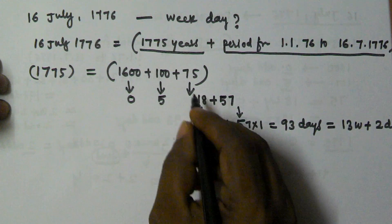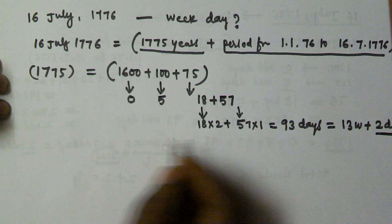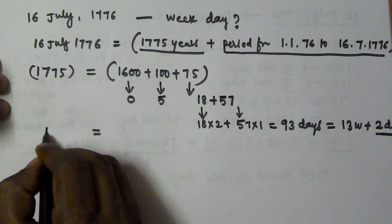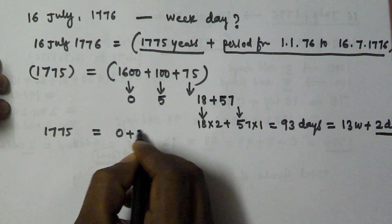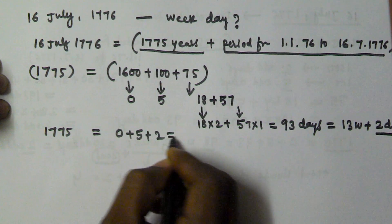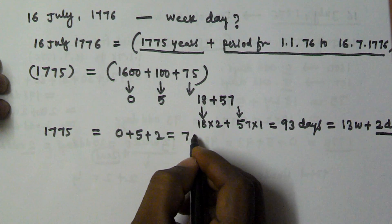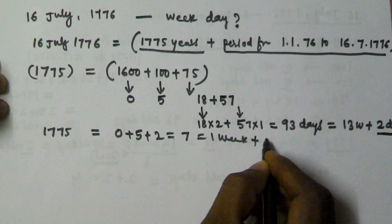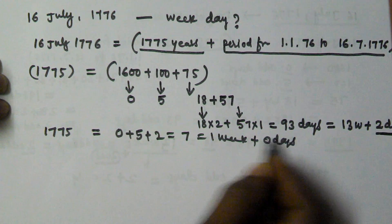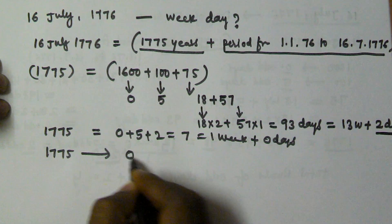That means the 75 years is going to contain 2 odd days. So the total number of odd days till 1775 is 0 plus 5 plus 2 equivalent to 7. Again we divide this one by 7 equal to 1 week plus 0 days. That means 1775 contains 0 odd days.